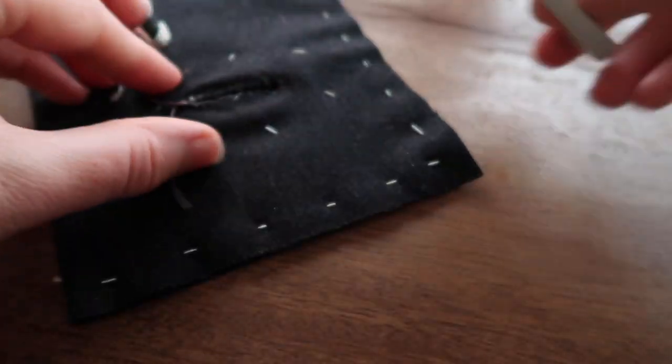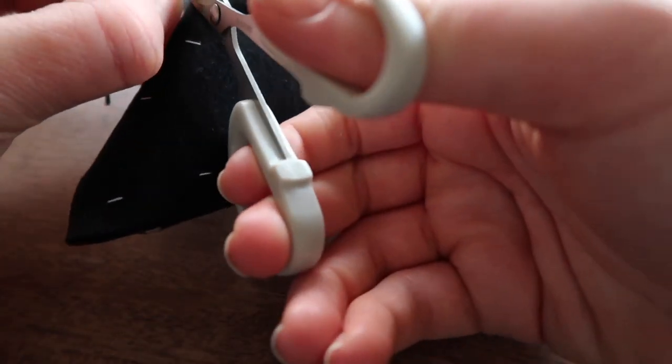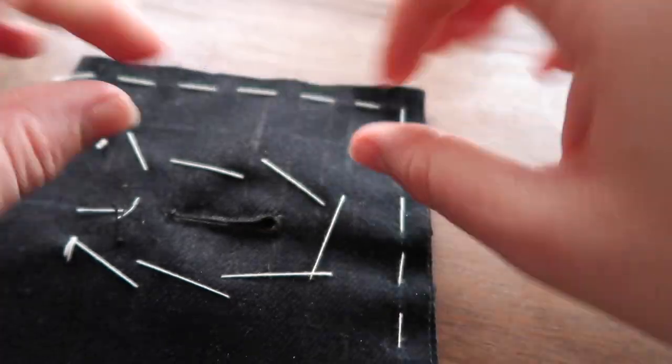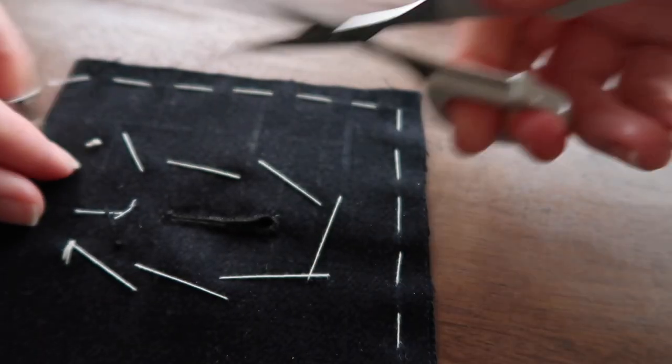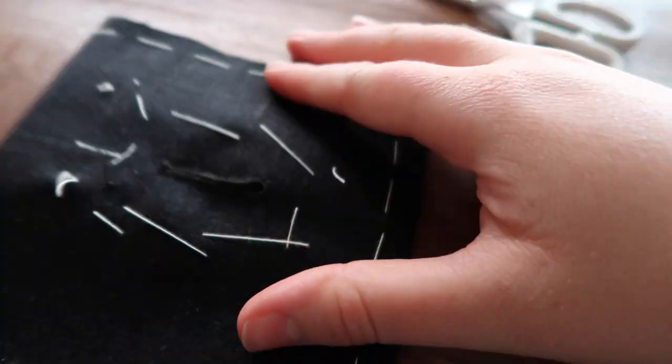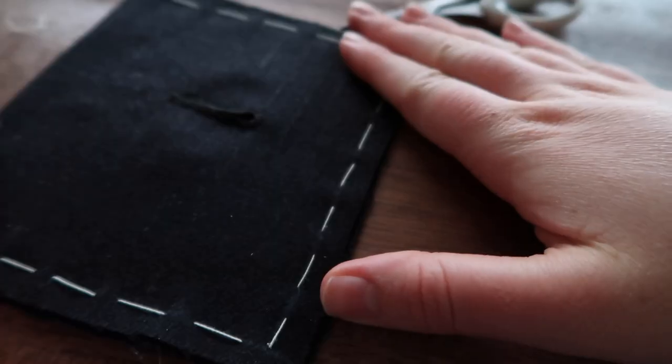So now here I'm going to cut off my gimp right at the end, like that. Now I can undo the basting thread. Now I'm going to go press it really quick, and then we're done.